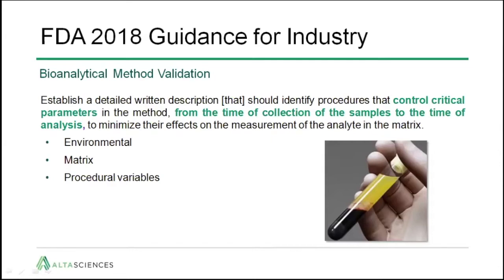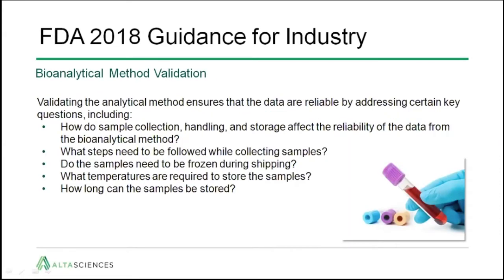The FDA 2018 stipulates that you have to establish a detailed procedure which identifies and controls critical parameters from the time of collection of the sample to the time of the analysis, in order to minimize the effect on the measurement of the analyte in the matrix. Therefore, you have to consider the characteristics of your collection tubes and transfer tubes, the matrix that you have to collect, and the procedural variables such as centrifugation speed.